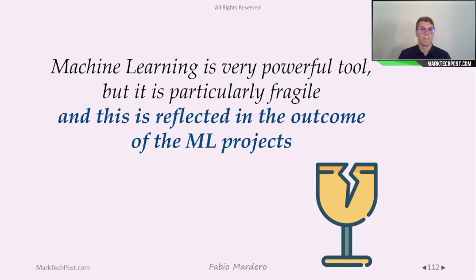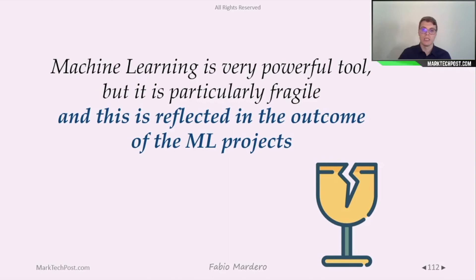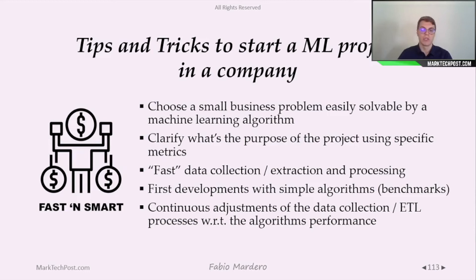Machine learning is a very powerful tool, but it is particularly fragile, and this is reflected in the outcomes of machine learning projects. Some tips to start a machine learning project in a company: first, choose a small business problem that could be easily solved using a machine learning algorithm. Before starting, clarify the purpose of the project using specific metrics so you can quantify the project's success. Prefer fast data collection or extraction.